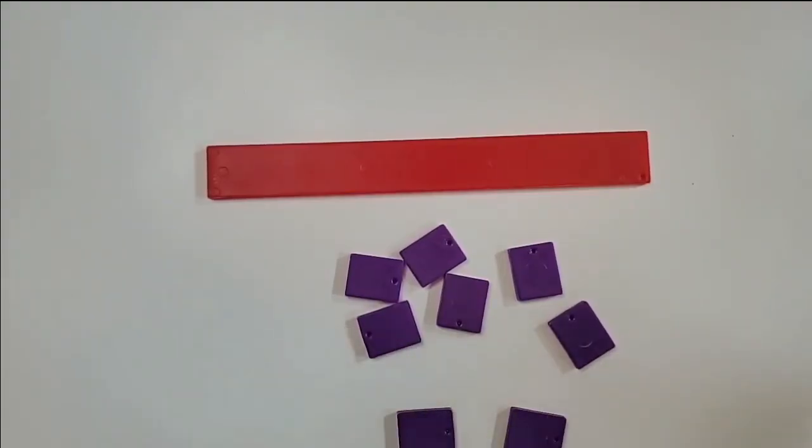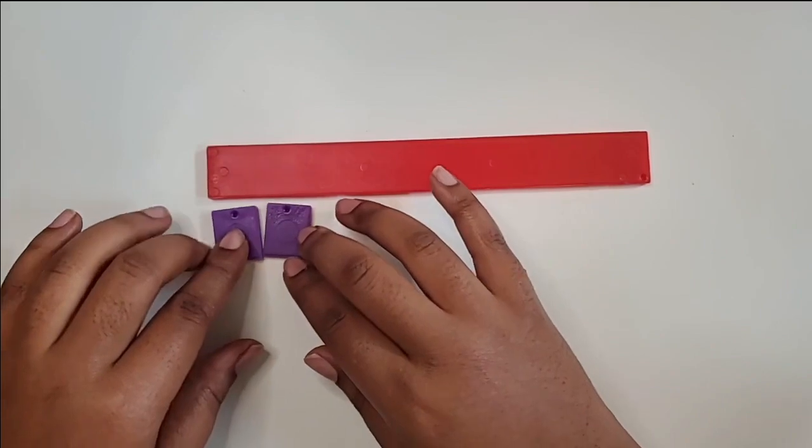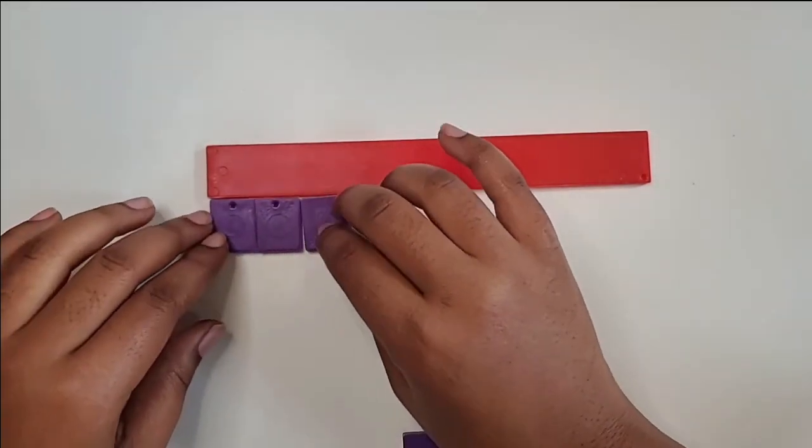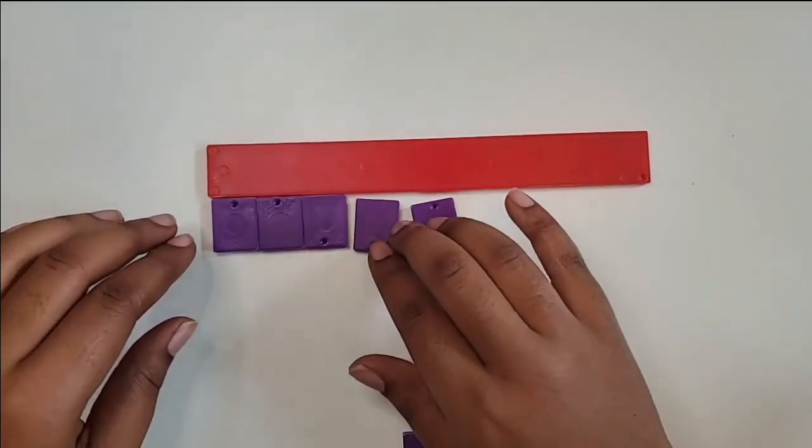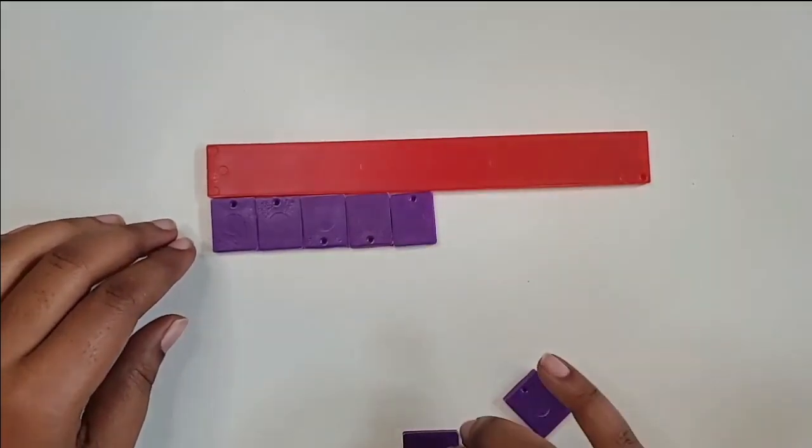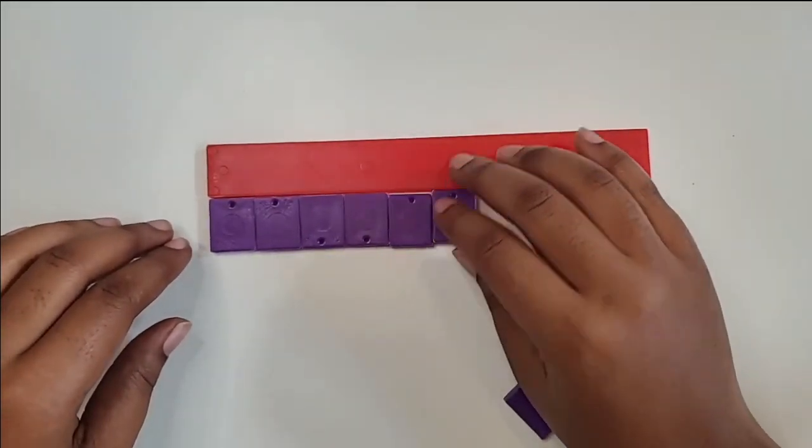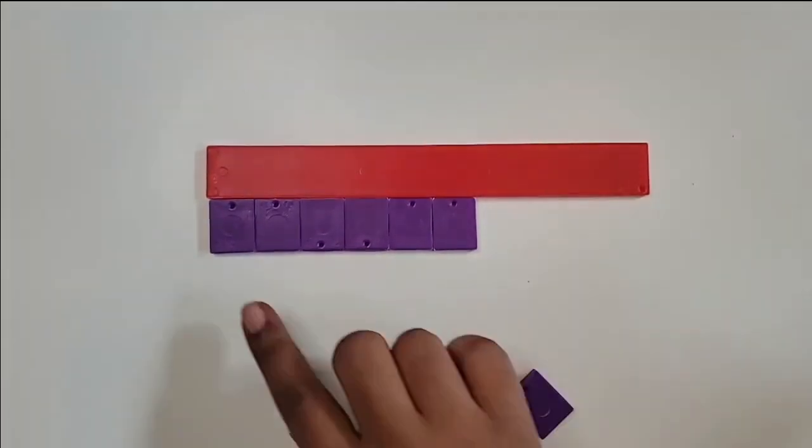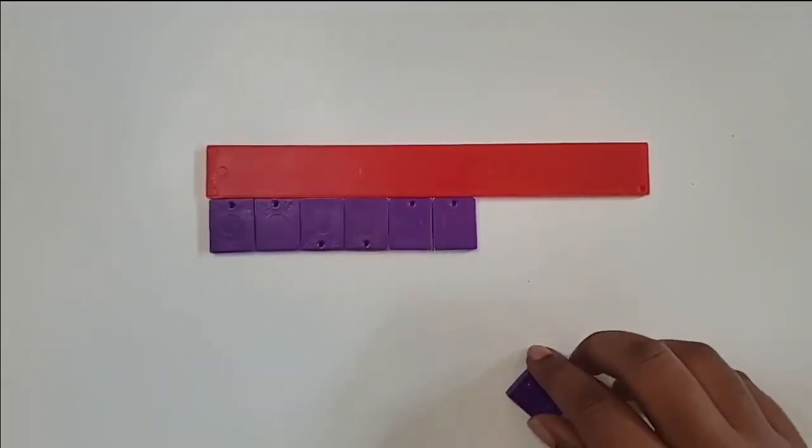I'm going to be using tenths. Ten of these equals one whole so they are tenths. So I'm going to take the number seven tenths and represent it here against my whole. One, two, three, four, five, six, seven.